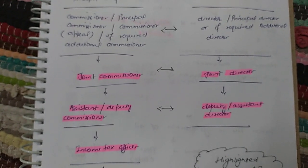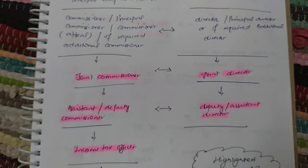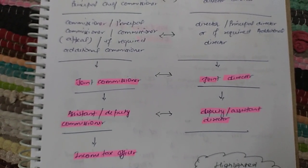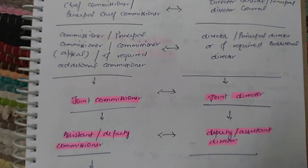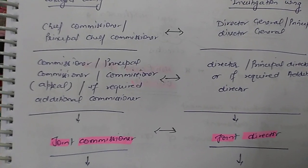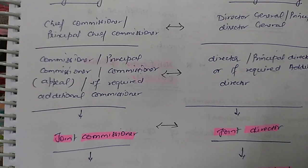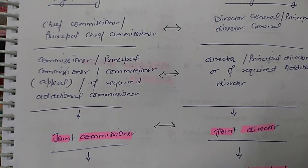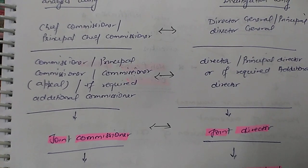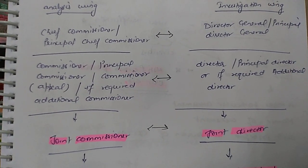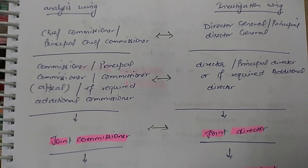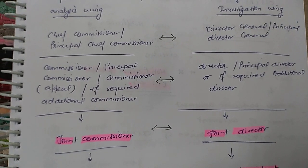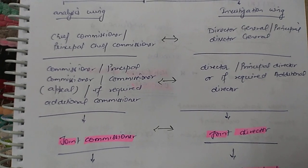Above these authorities we have the Joint Commissioner in the Analysis Wing, and parallel to the Joint Commissioner we have the Joint Director in the Investigation Wing. Above them we have the Commissioner, Principal Commissioner, Commissioner of Appeals, and if required, the Additional Commissioner in the Analysis Wing. Parallel to these officers, we have the Director, Principal Director, and if required the Additional Director under the Investigation Wing.